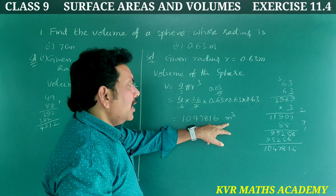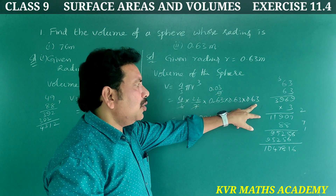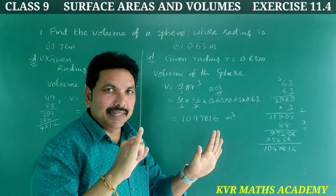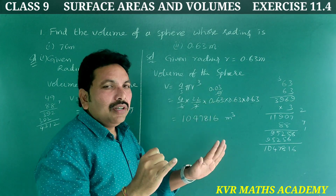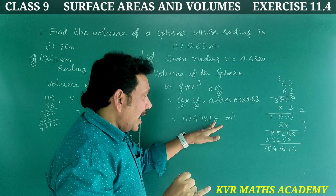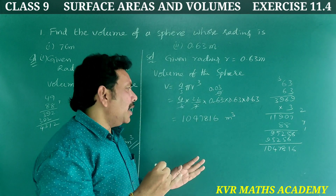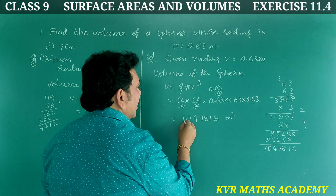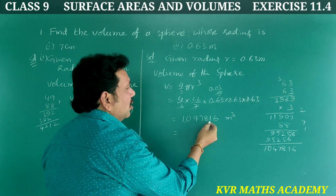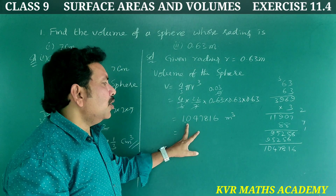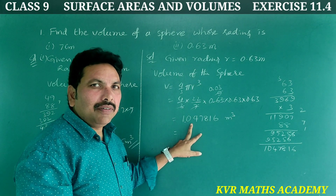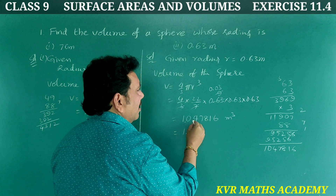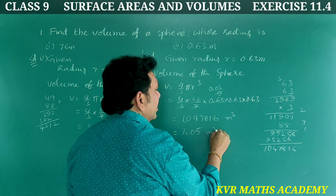Now placing the decimal point: 0.63 has 2 digits after the decimal, and cubing it gives 6 digits after the decimal. So we place the point 6 digits from the right in 1047816, giving 1.047816. Rounded to 2 decimal places, this is approximately 1.05 meter cube.